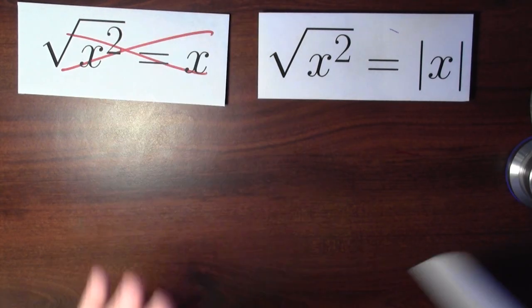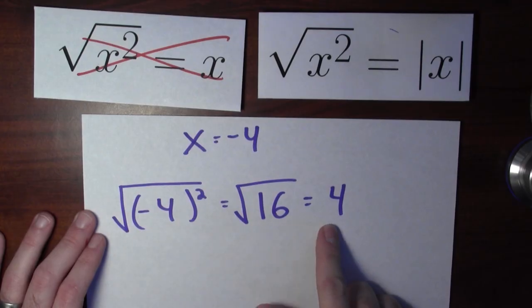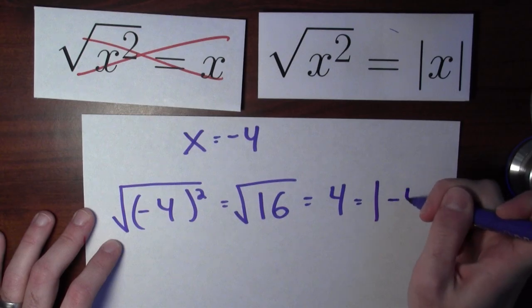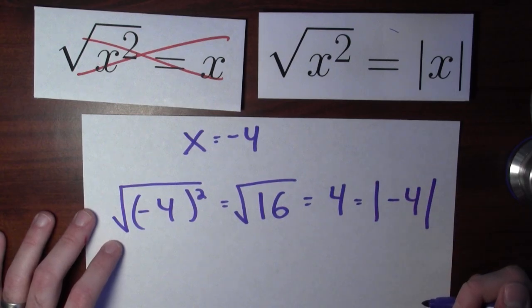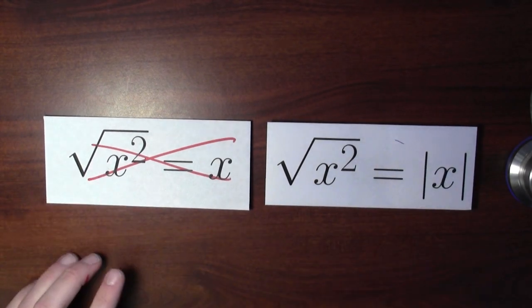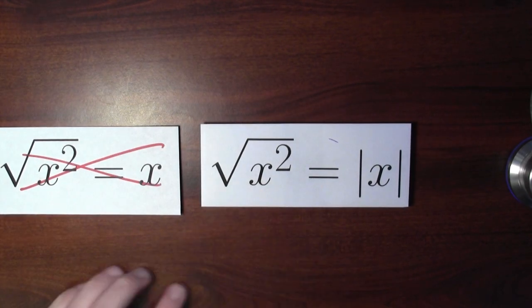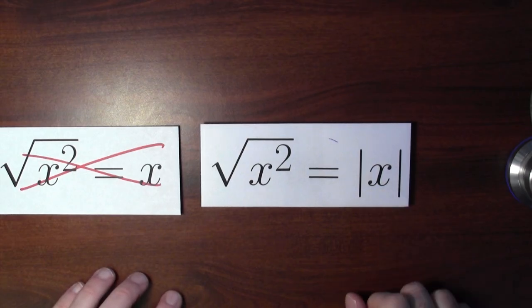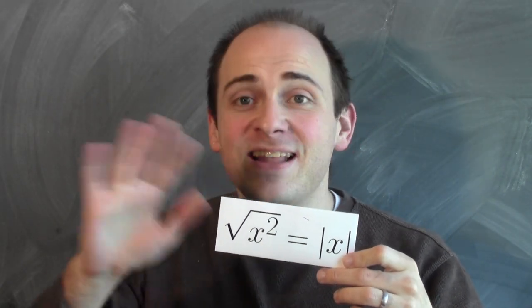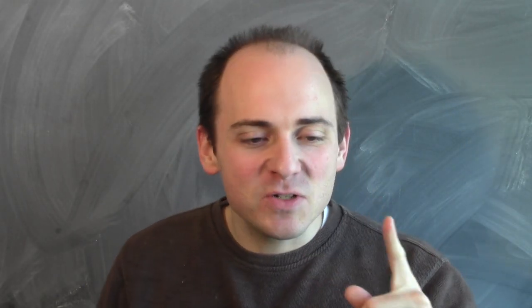That works in this specific case: when x is minus 4, the square root of minus 4 squared — that's the square root of 16 — is 4. And 4 really is the absolute value of minus 4. This is a mistake that comes up quite a bit. People are often tricked into thinking that the square root of x squared is just x, trying to cancel the square root and the square. That's not possible. Instead, what is true is the square root of x squared is the absolute value of x.